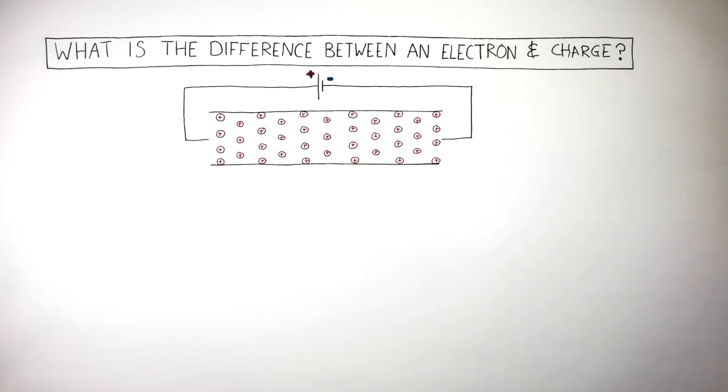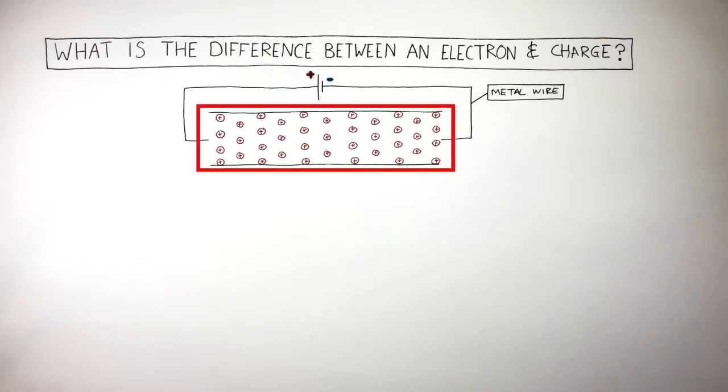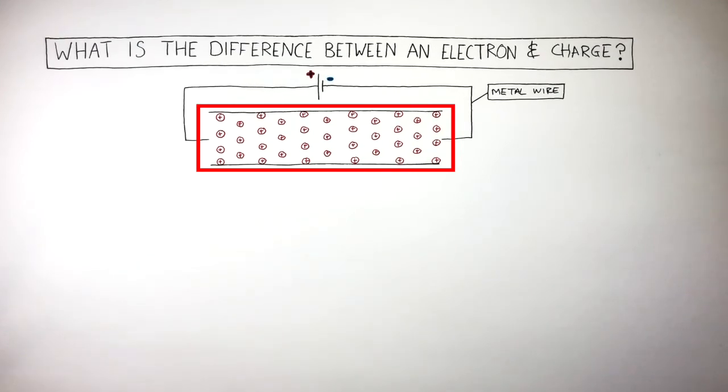Here is a diagram of a cell connected to a metal wire. Here is a close-up of the metal wire showing the giant metallic lattice structure. The red circles with crosses represent the positive metal cations. We're going to see how the electrons flow through the metal to understand what is the difference between an electron and charge.